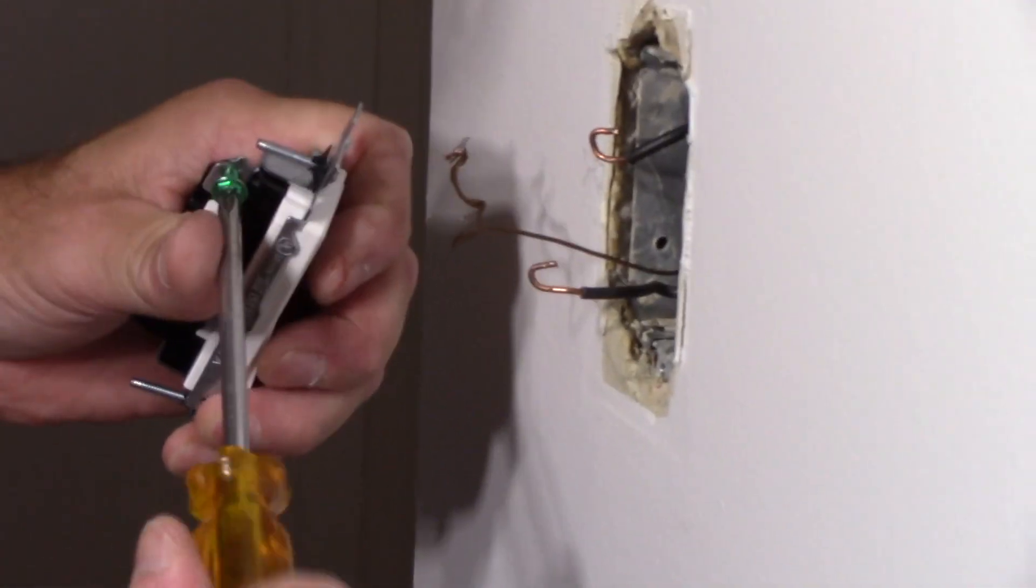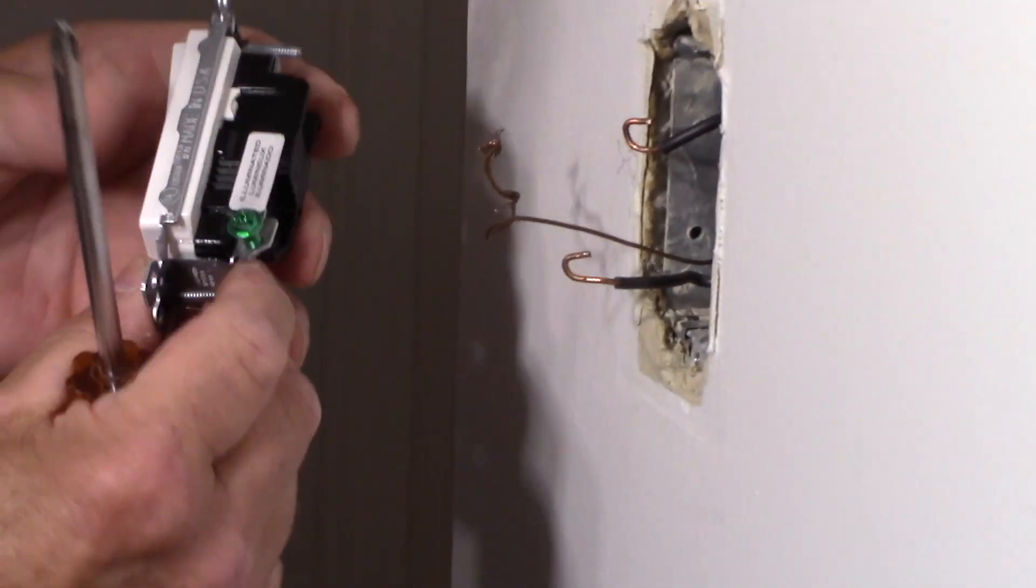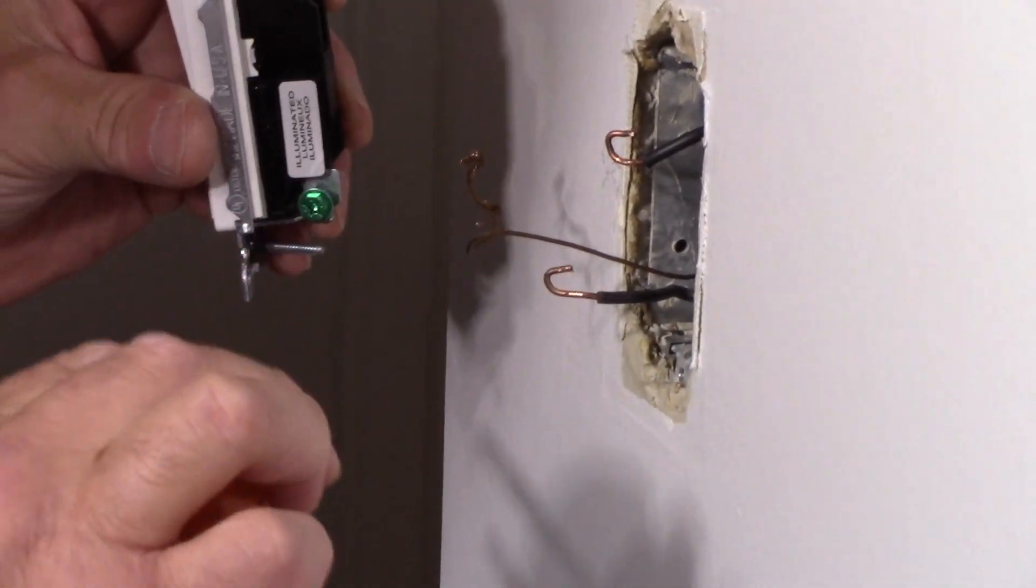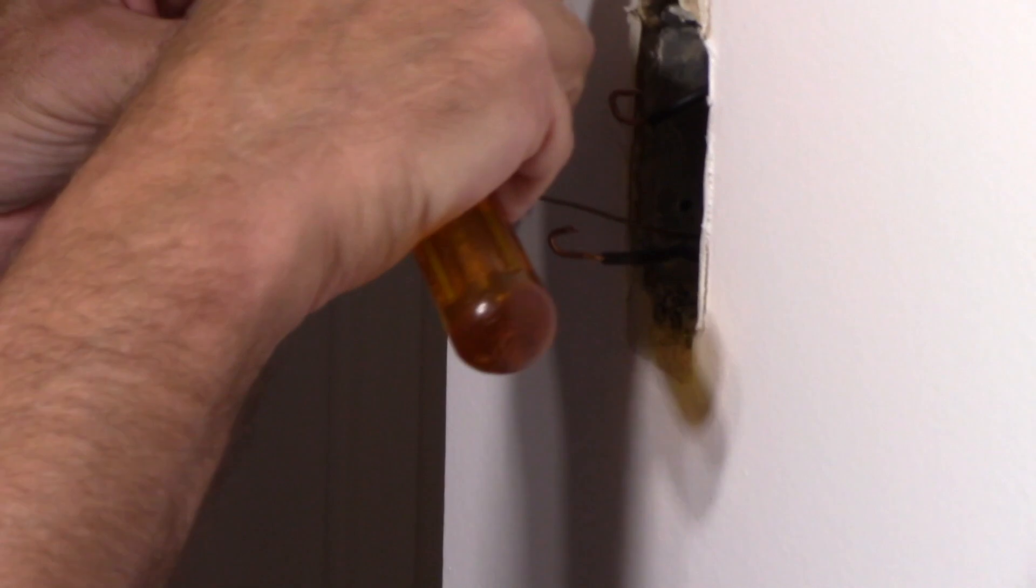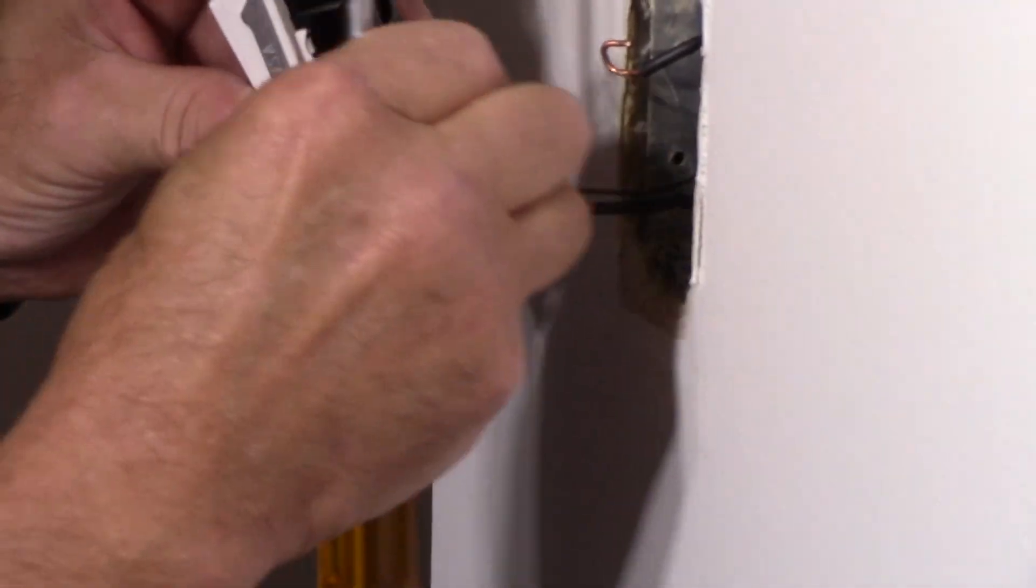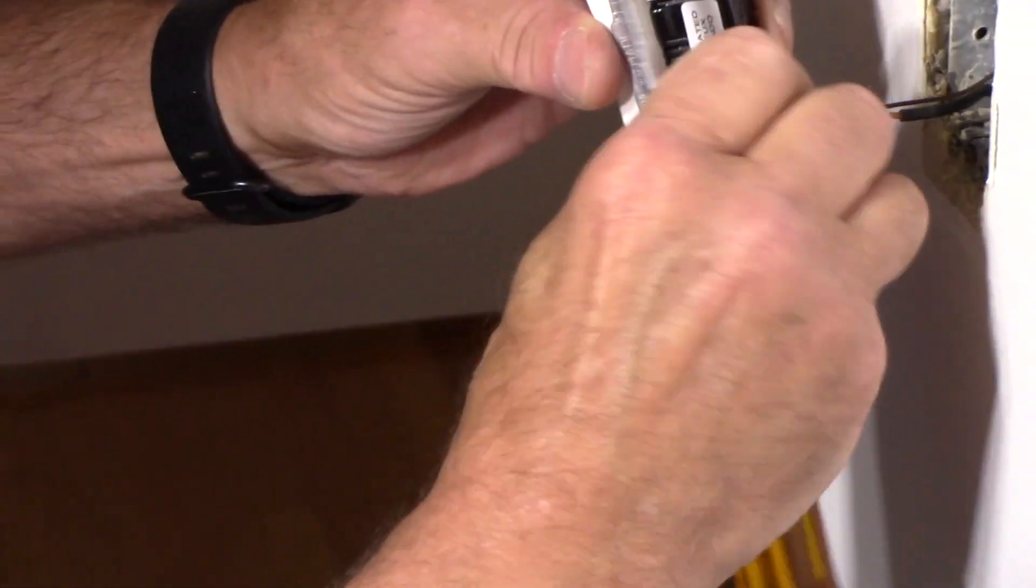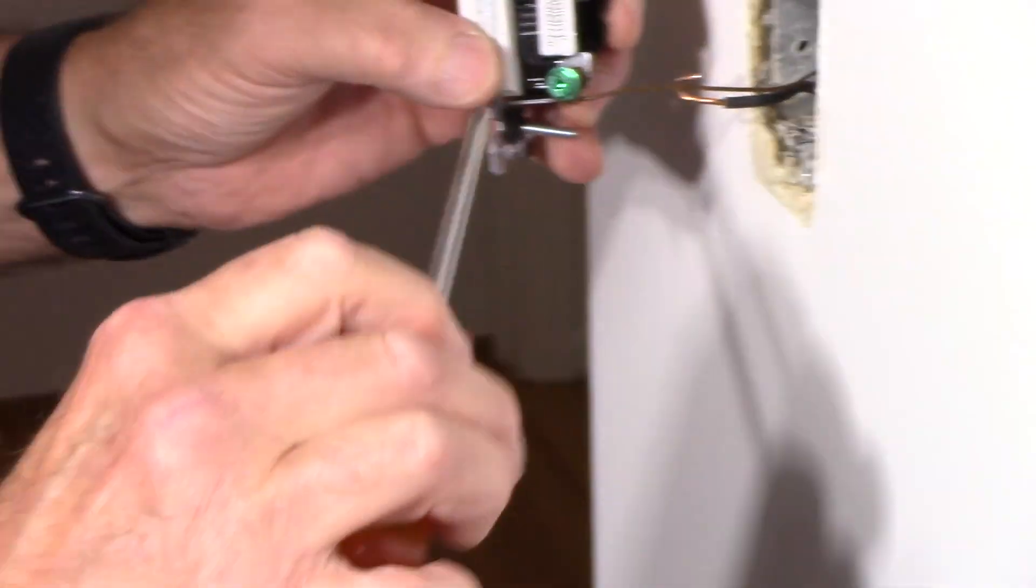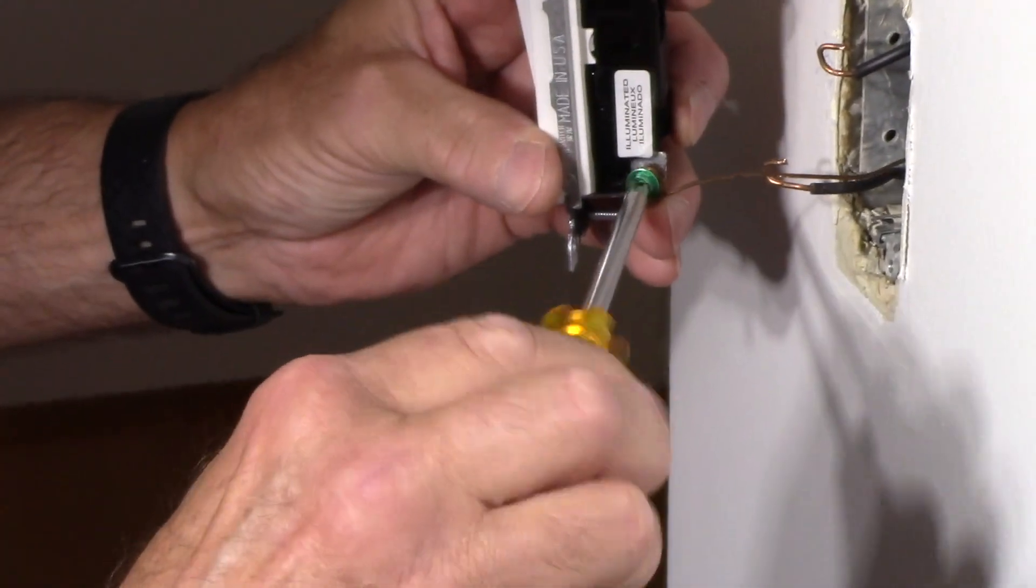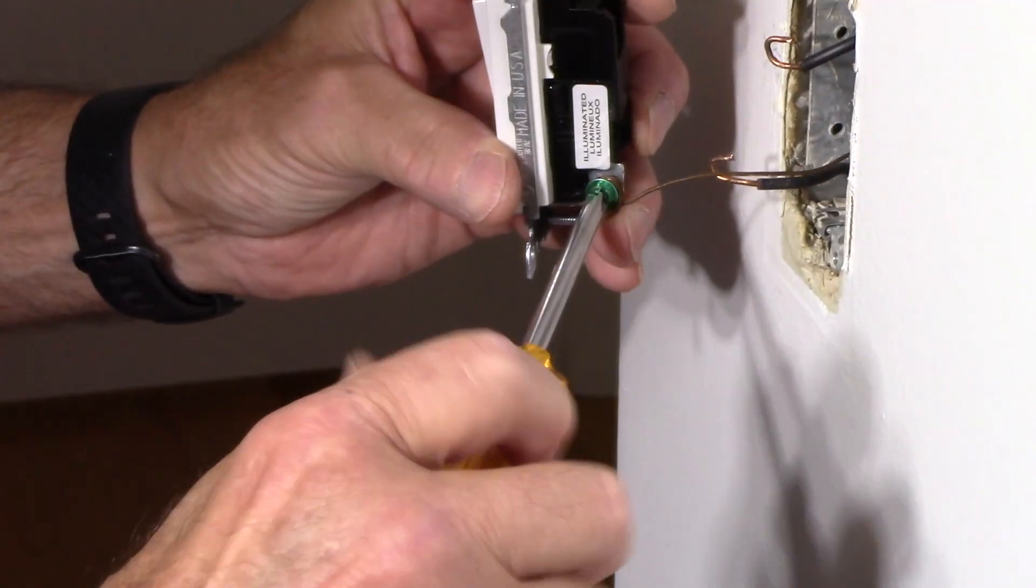And it's going right onto that green colored screw right there. Now we have the screw and we're going to turn it in a clockwise position. So you want to make sure that when you put the wire on like that that you wrap it around in a clockwise position like that. So now when you tighten it, it pulls the wire in tighter instead of opening it up.